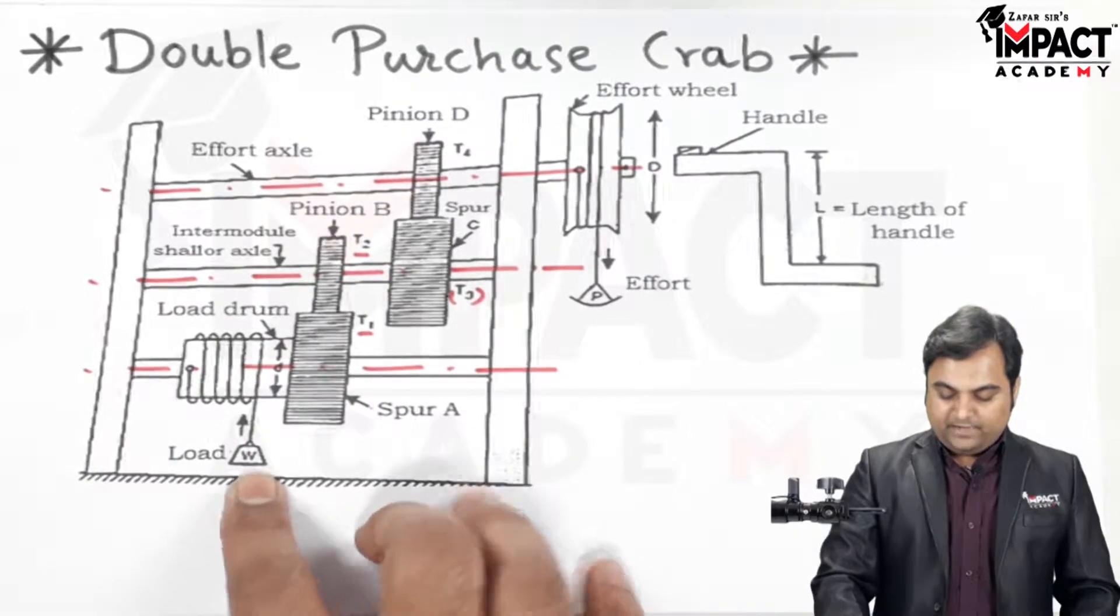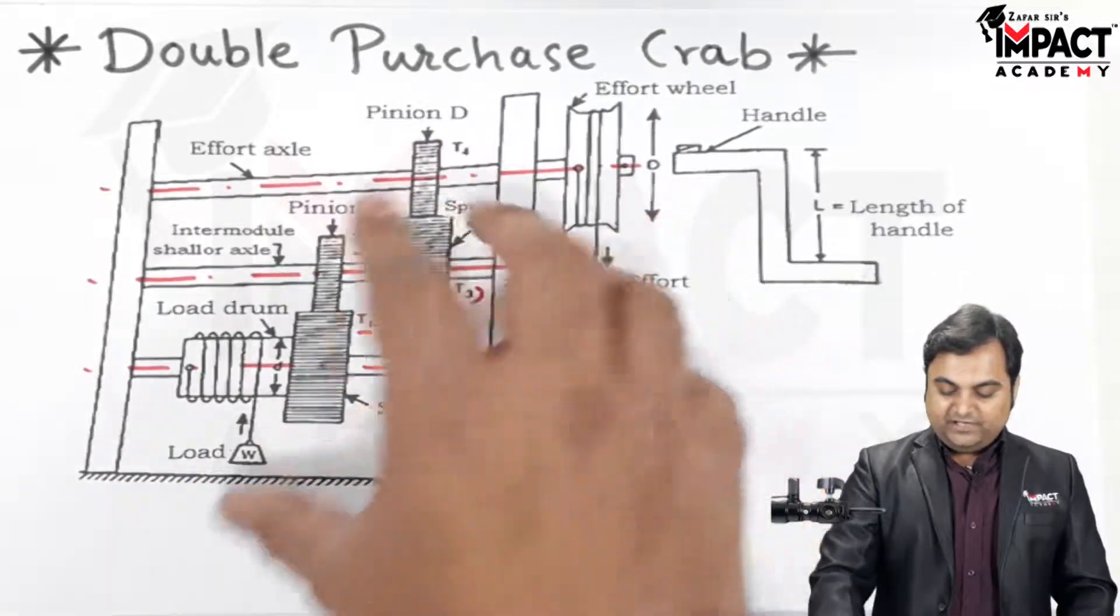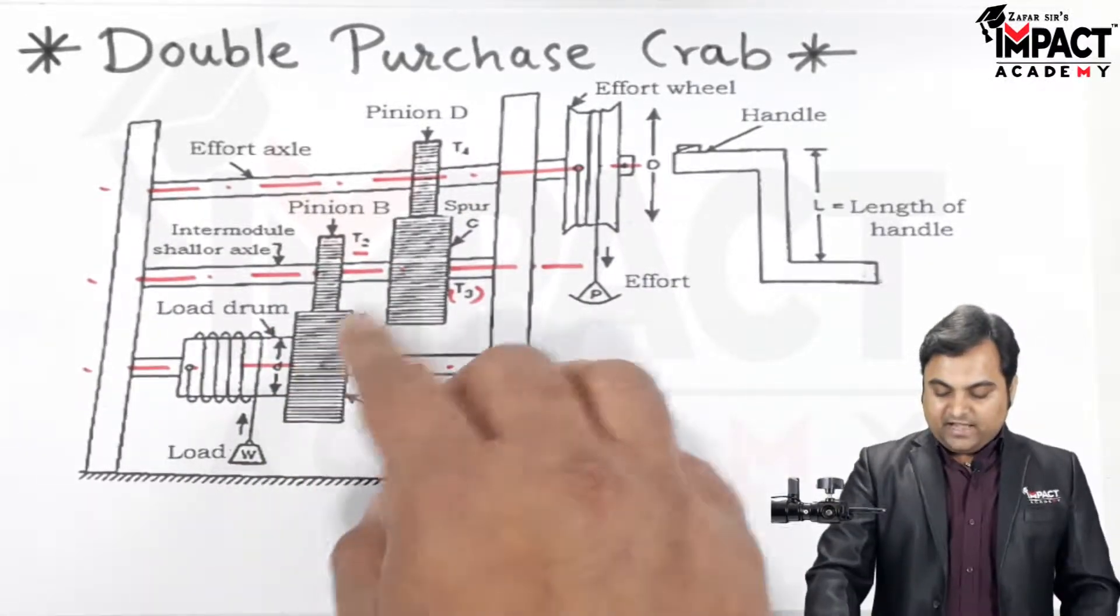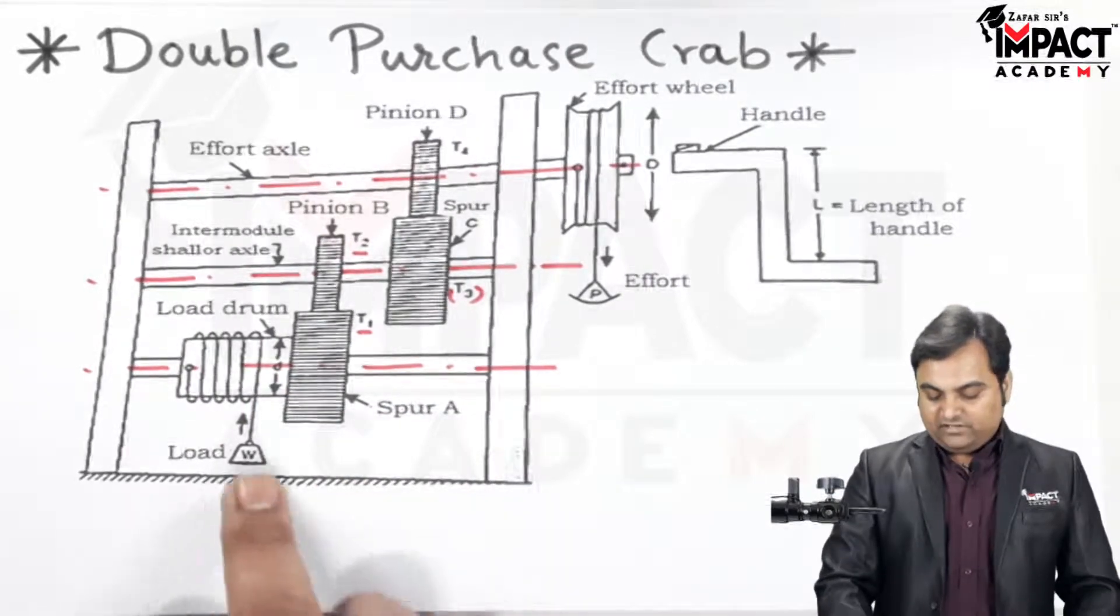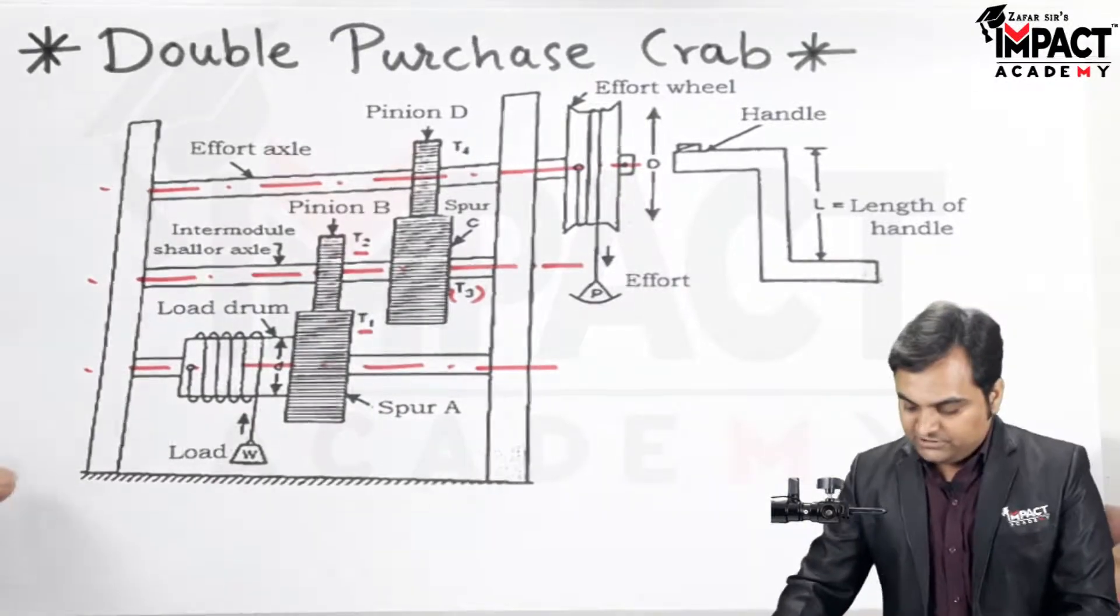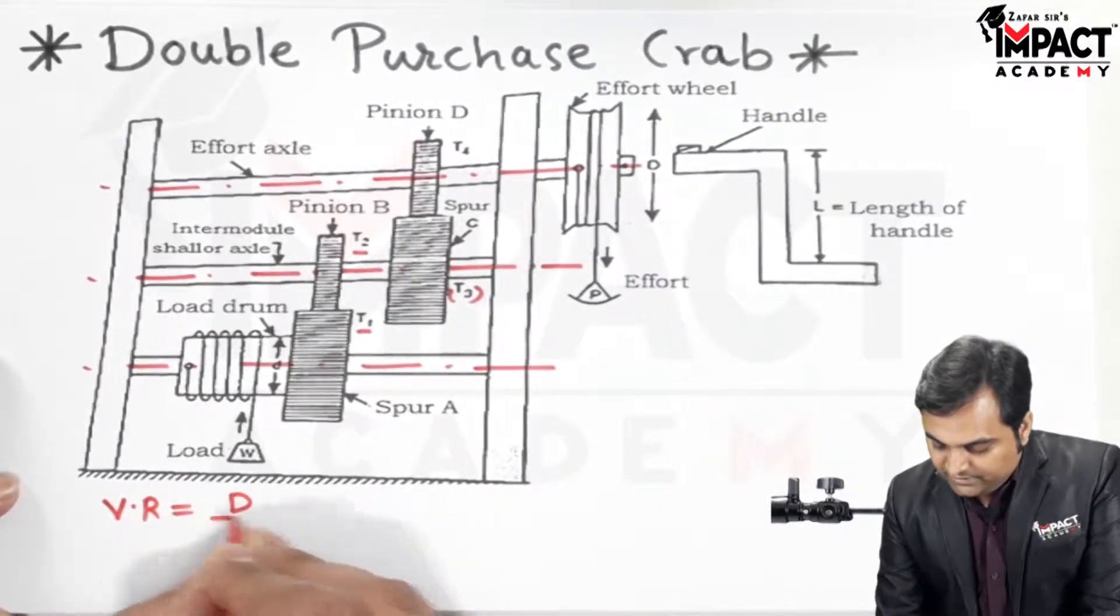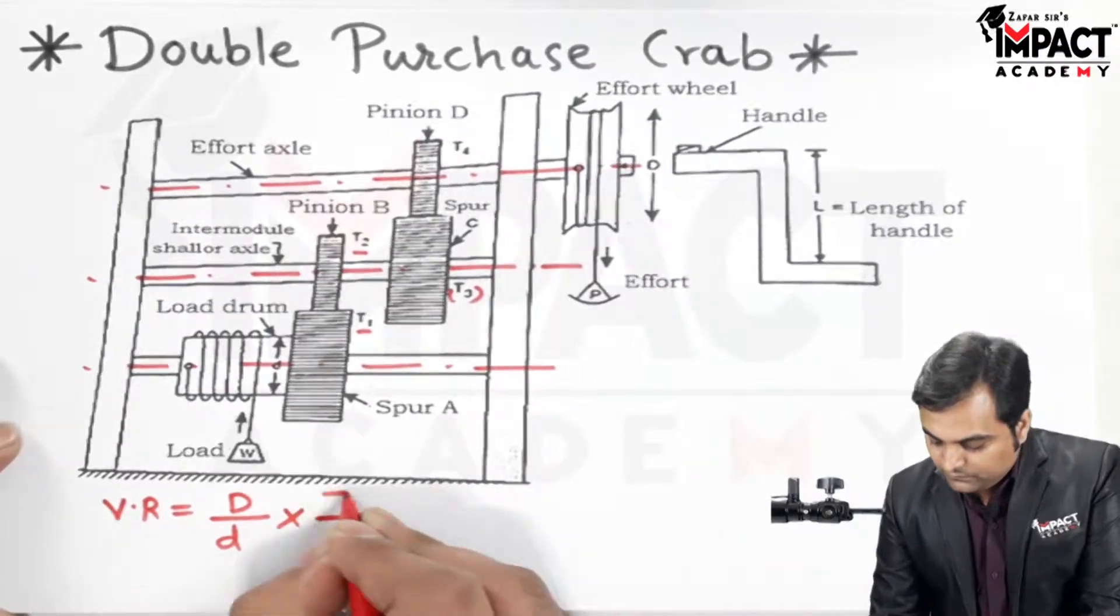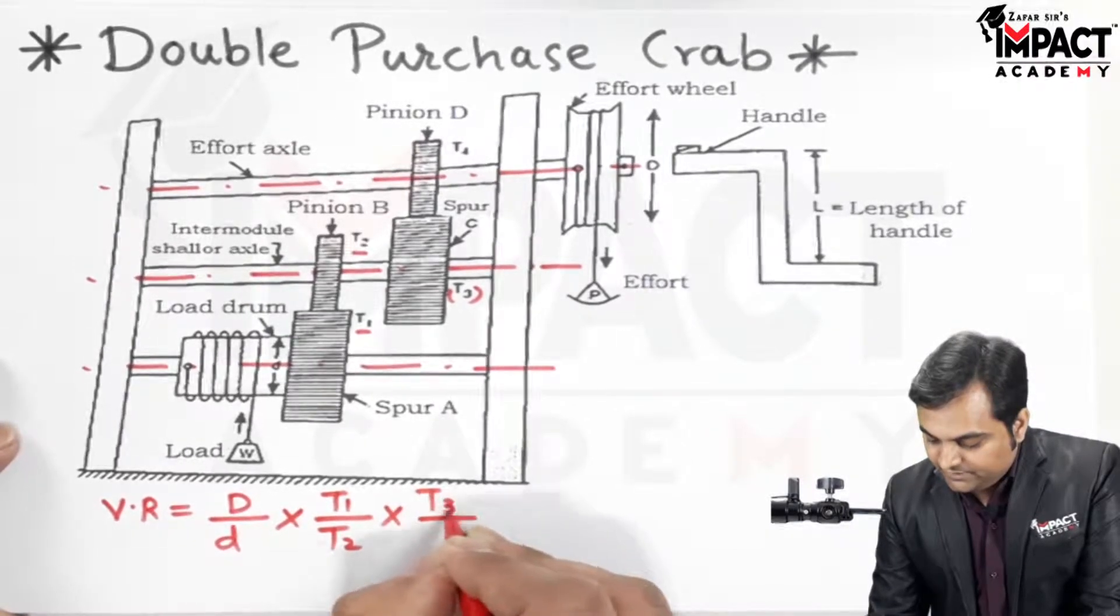We are using such gearing arrangement because if we want to lift heavier loads, we have more torque multiplication by using number of gears and the heavy load gets lifted. So the velocity ratio formula for double purchase crab is given by capital D upon small d, into t1 upon t2, multiplied by t3 upon t4.